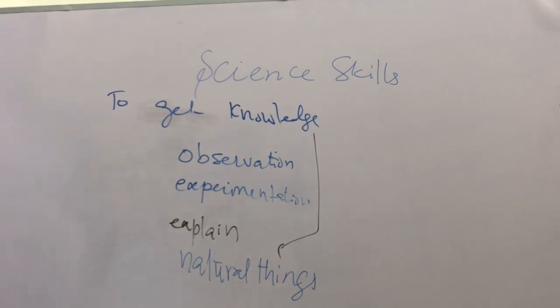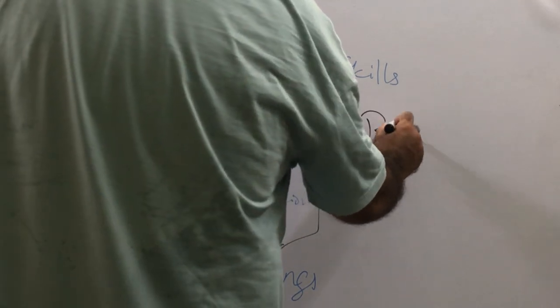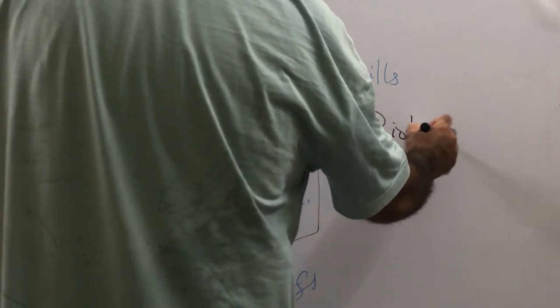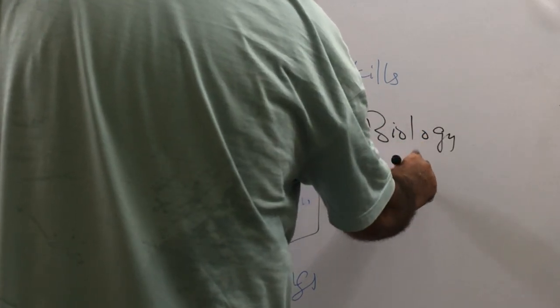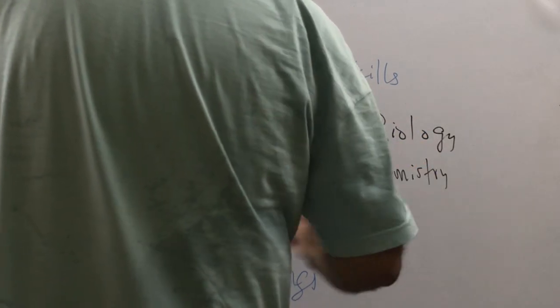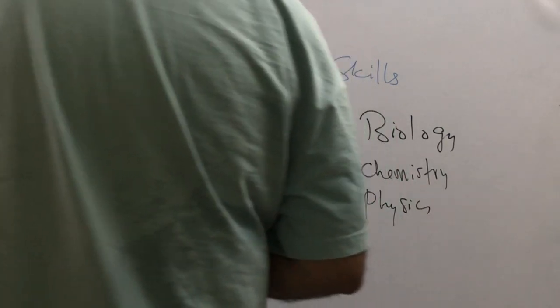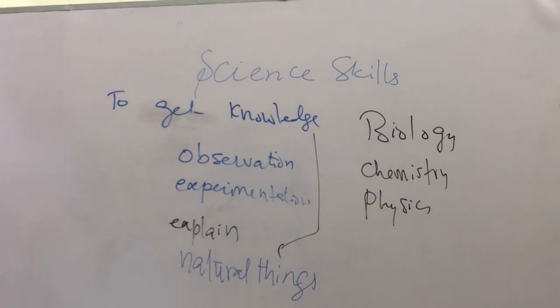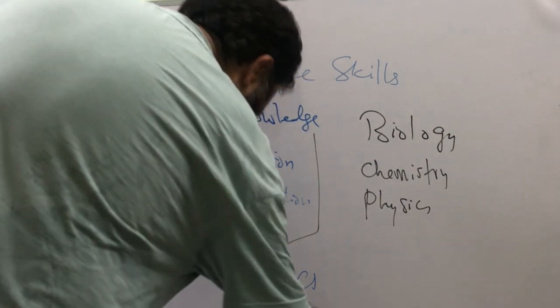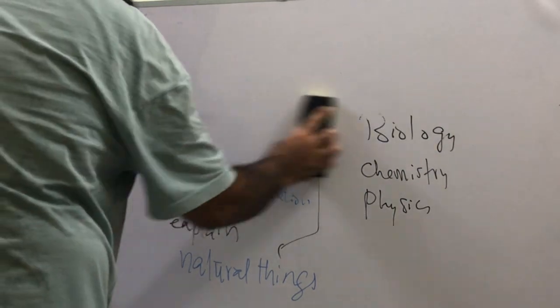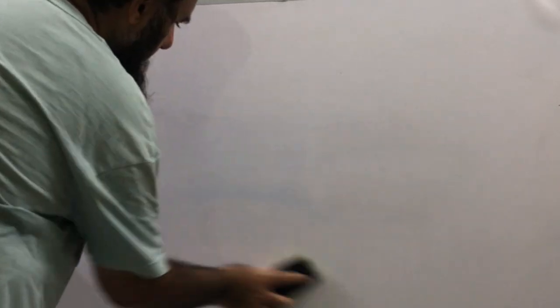Science has several areas and you already know some of those areas like biology, chemistry, you are well aware of biology, chemistry, physics. These are the branches of science. So we will go through the basic definitions or the ideas about these things.